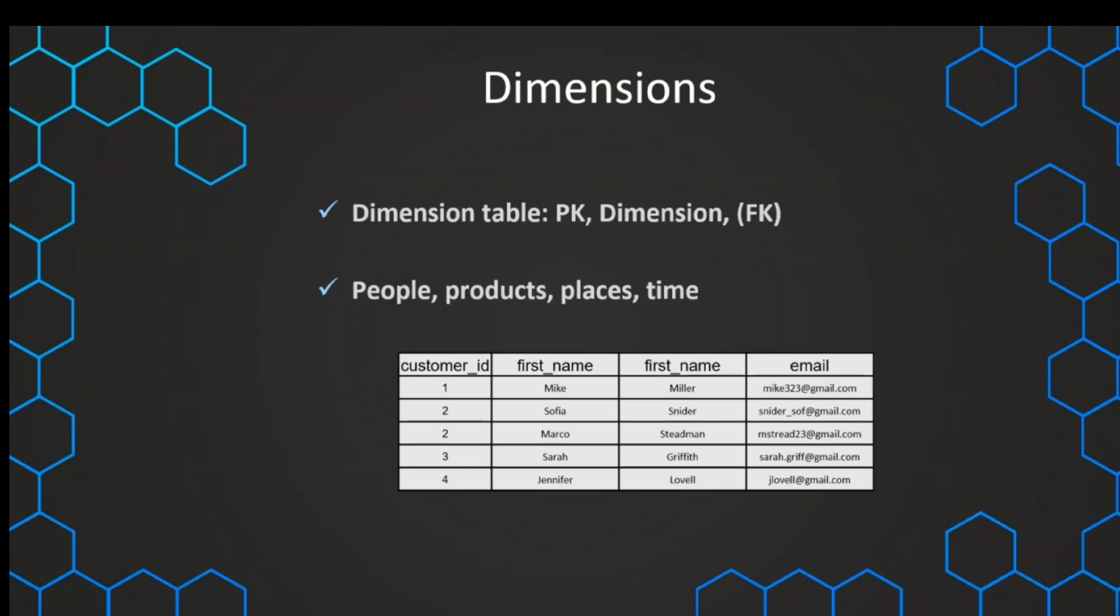Of course, as mentioned, they can sometimes change. For example, we can have slowly changing dimensions. This is a specific type of dimension which we'll also talk about later on.